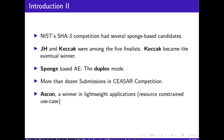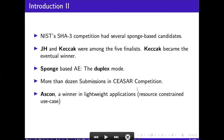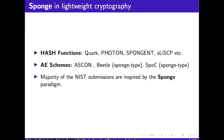The popularity of Sponge is evident from the fact that the NIST competition had several Sponge-based candidates. JH and Keccak were among the five finalists where Keccak became the eventual winner. The duplex mode is also Sponge-based. There were more than a dozen submissions in the CAESAR competition depending on the sponge paradigm. Ascon is also a sponge-type construction and was the winner of the lightweight competition. In the lightweight domain, hash functions such as Quark, Photon, Spongent, and PLIS are all sponge-based. AEAD schemes such as Ascon, Beetle, and SPOC are also sponge-based. In fact the majority of NIST submissions for the lightweight cryptography competition are based on the sponge paradigm.